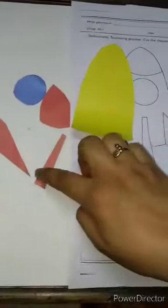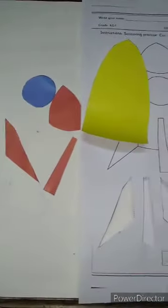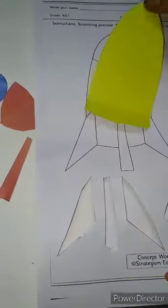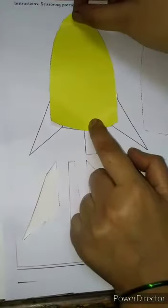Kids, look here. I have cut the parts of rocket. Now kids, look here. This part is the whole part of rocket. So I will stick the part here.